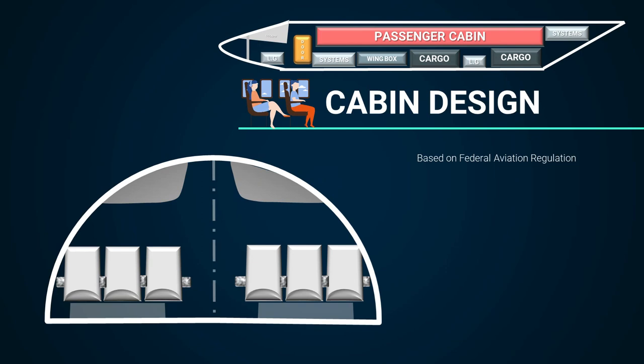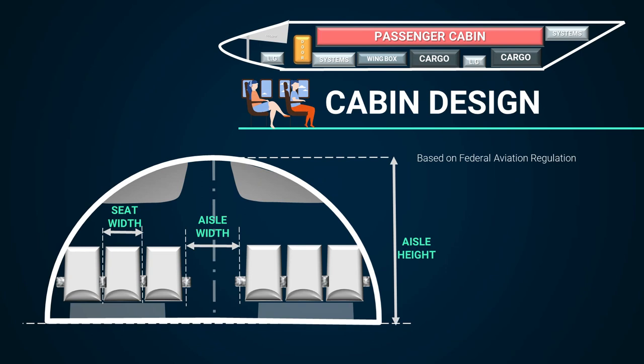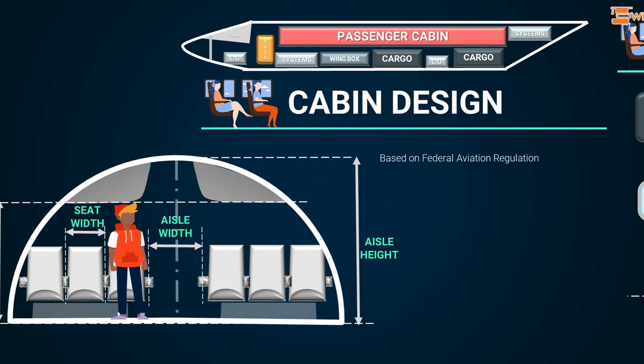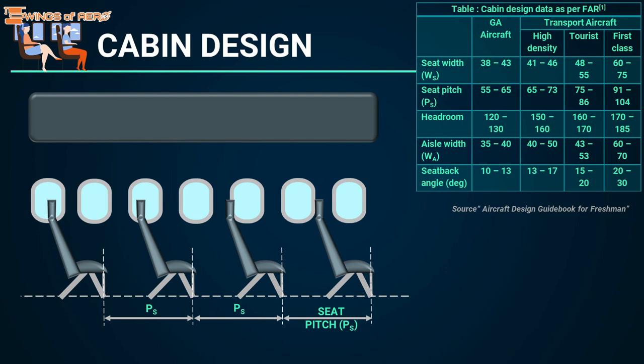Seat width is the physical size of the seat. Aisle width must be wide enough to walk up and down without disturbing passengers. Aisle height is the height from the floor to the cabin ceiling. Headroom is the average human standing height. Pitch is the space of legroom in an aircraft cabin. From this FAR data chart, you can pick the right values for your aircraft.